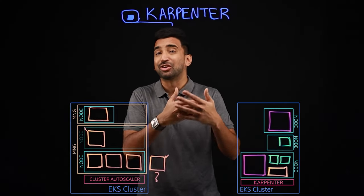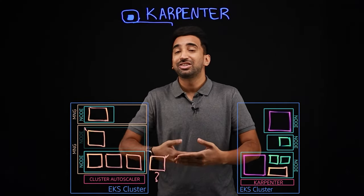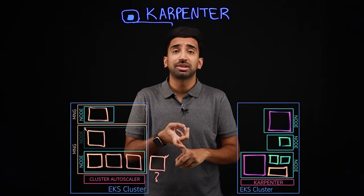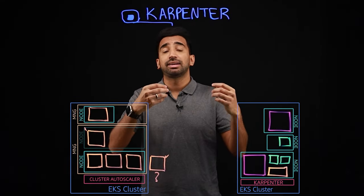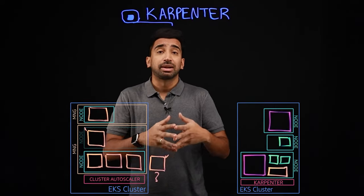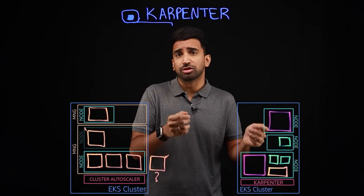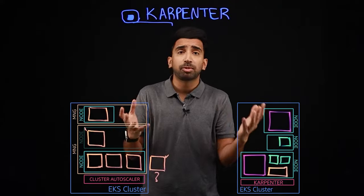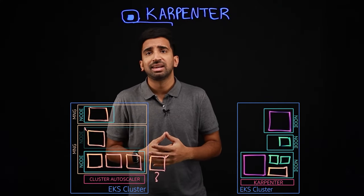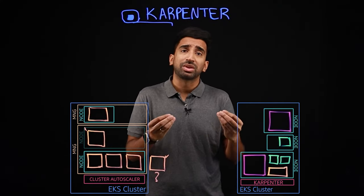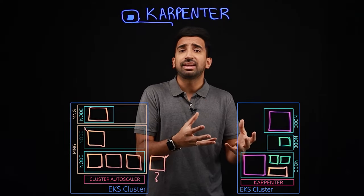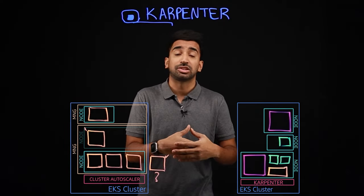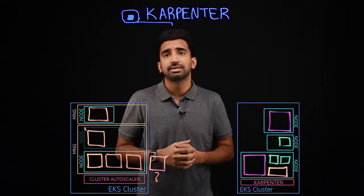You might be wondering how to control how Karpenter operates. There are actually many dimensions of control: you can set constraints on Karpenter to limit the instance types it's able to use, and you can set up taints to isolate workloads to specific types of nodes. With multiple provisioners and layered constraints, multiple teams can work within a cluster, isolating nodes for things like billing, or maybe you want a specific team to have access to GPU-based instances.